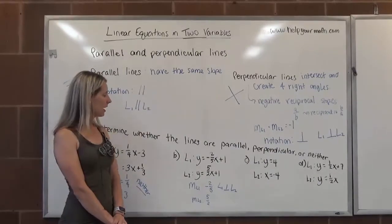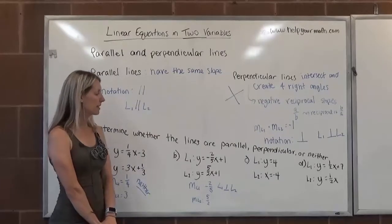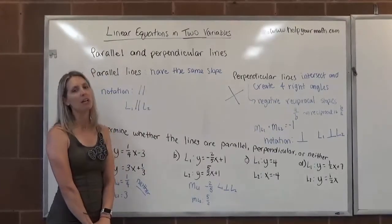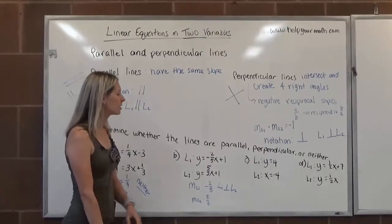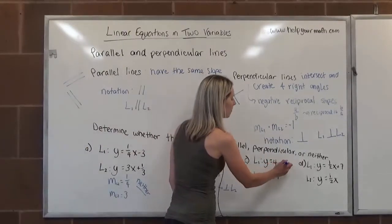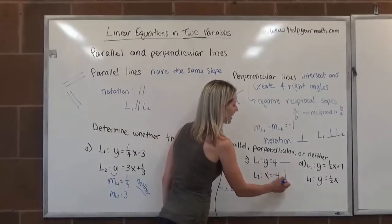Letter C, line one is given by the equation y equals four. Line two is given by the equation x equals negative four. This one is special because these are special lines. So y equals four is a horizontal line at four. X equals negative four is a vertical line at negative four.